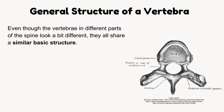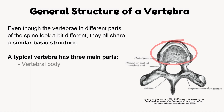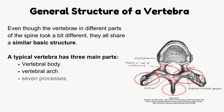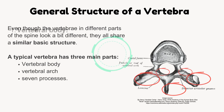General structure of a vertebra. Even though the vertebrae in different parts of the spine look a bit different, they all share a similar basic structure. A typical vertebra has three main parts: the vertebral body, the vertebral arch, and seven processes.